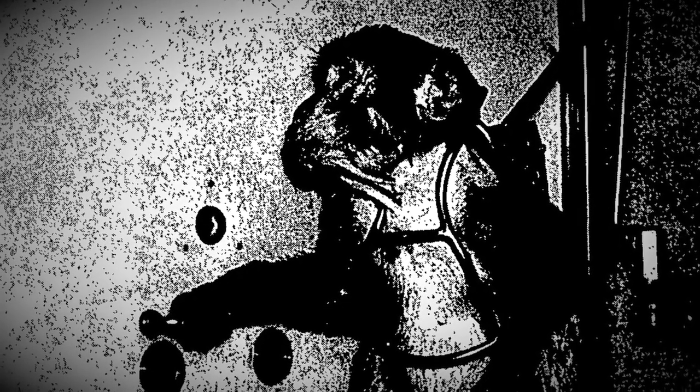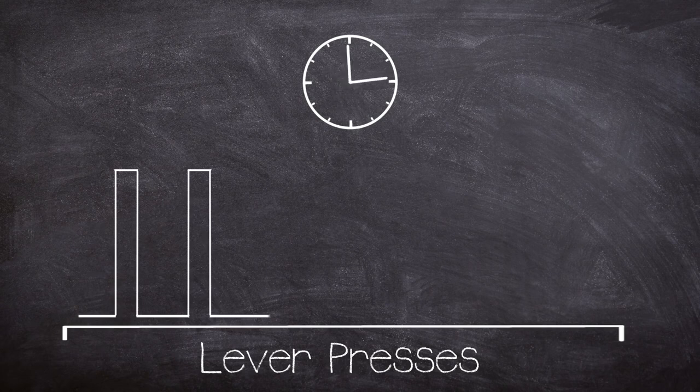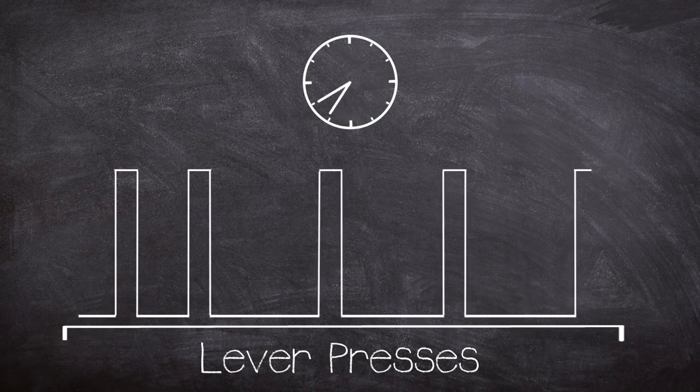After fully recovered, the monkey is introduced to the switches in its cubicle. At this point, the active switch, that is the switch that can administer through the catheter, is only able to give a dose of saline solution. A signal light is placed above the switch to give a visual indication to the monkey that pressing the switch will result in a dose. For the next few days a baseline is recorded of the amount of times the subject presses the switch for the saline dose.